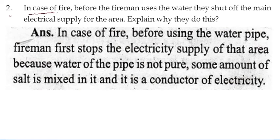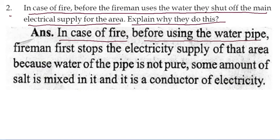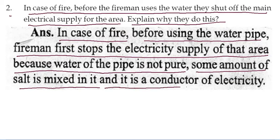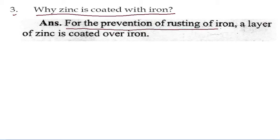In case of fire, before the firemen use water, they shut off the main electric supply for the area. This is because water from a pipe is not pure — some amount of salt is mixed in it and it is a conductor of electricity. Using water while the electricity is on could cause damage. Also, zinc is coated over iron for the prevention of rusting: a layer of zinc is coated over iron to prevent its corrosion.